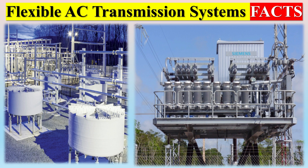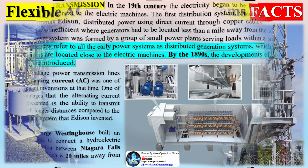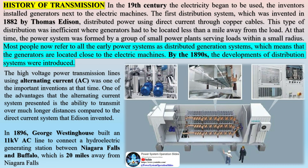In the history of transmission, in the 19th century electricity began to be used and inventors installed generators next to the electric machines. The first distribution system, invented in 1882 by Thomas Edison, distributed power using direct current through copper cables. This type of distribution was inefficient, where generators had to be located less than a mile away from the load.